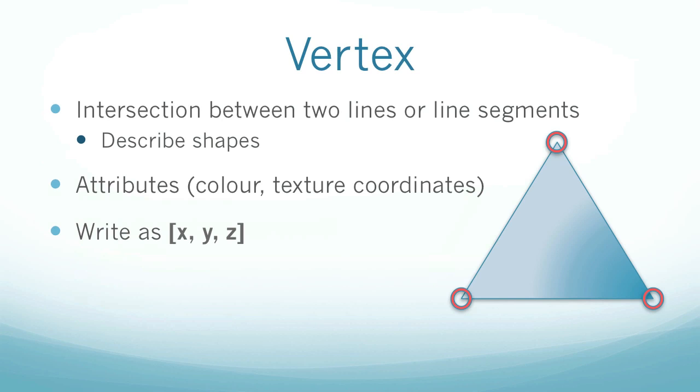Okay, now for a vertex, which is very similar to a point, but there is a difference. A vertex is an intersection between two lines or line segments, and it's also a point. A vertex is used to describe shapes. So a triangle consists of three vertices. You can see I've drawn a triangle, and I have created little red circles indicating where the vertices are.